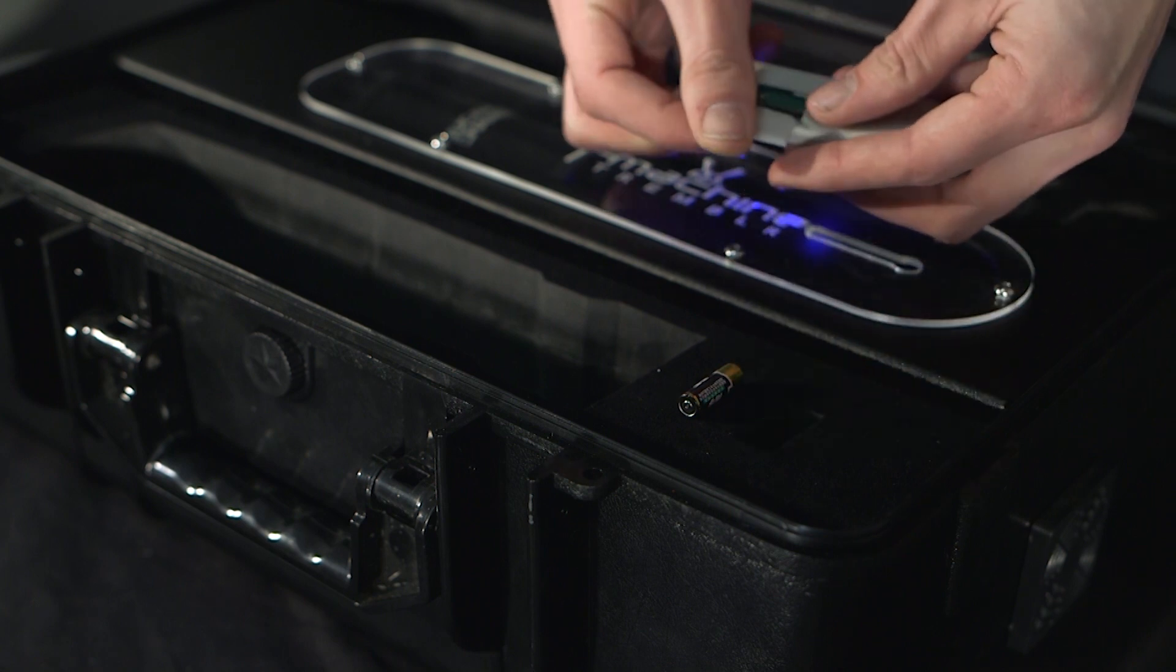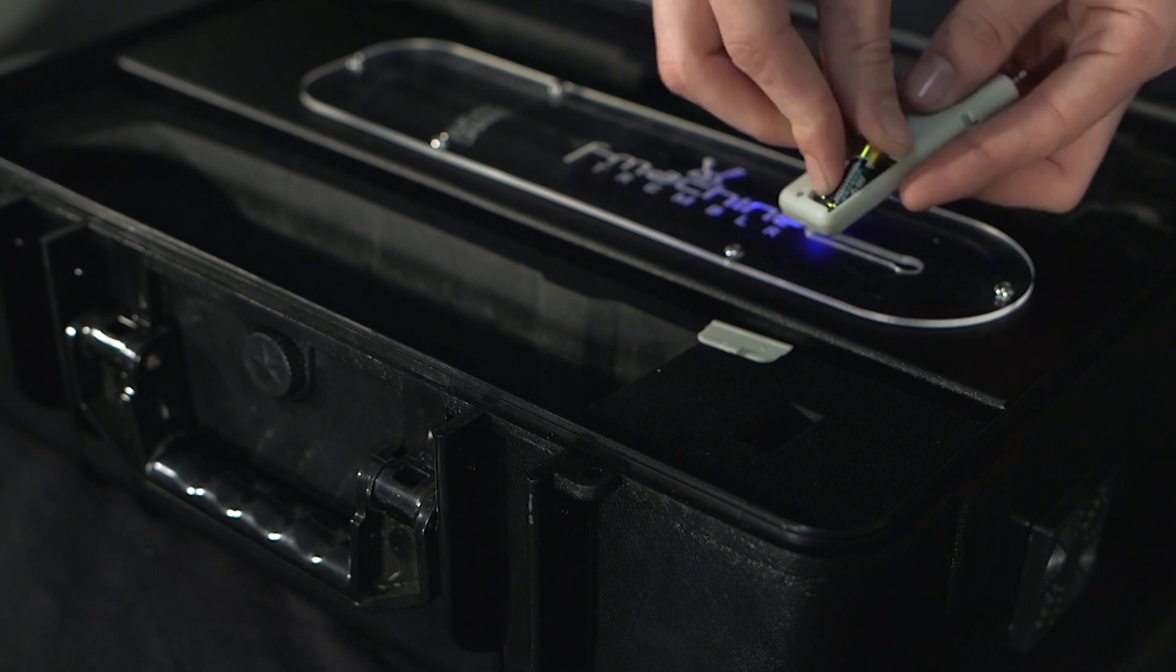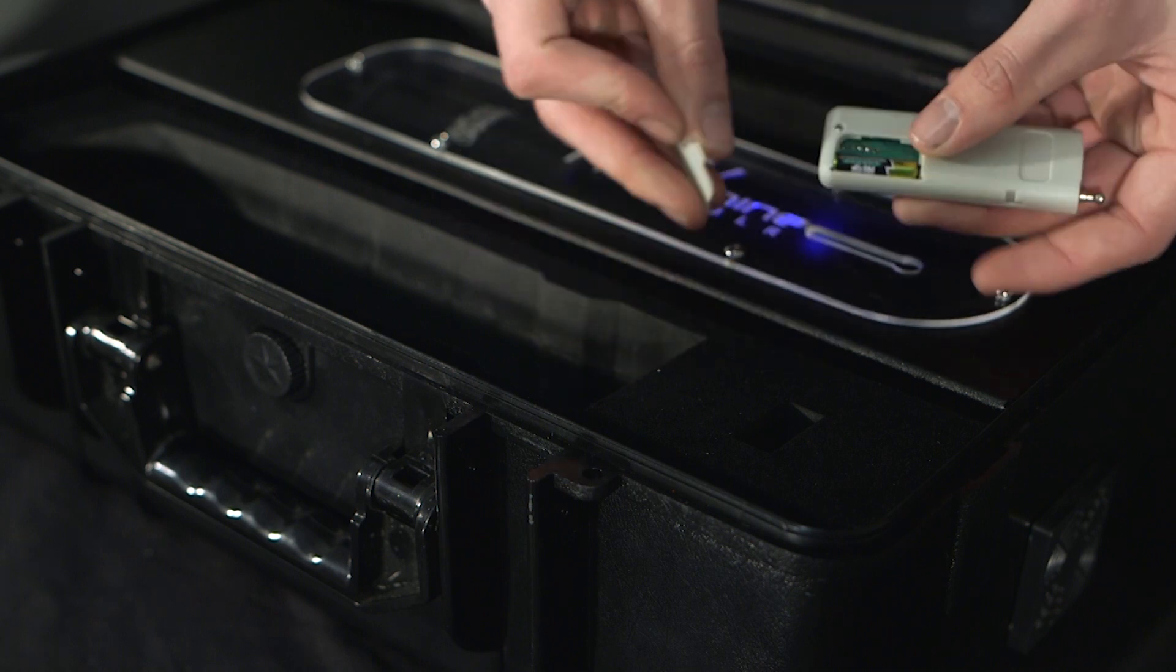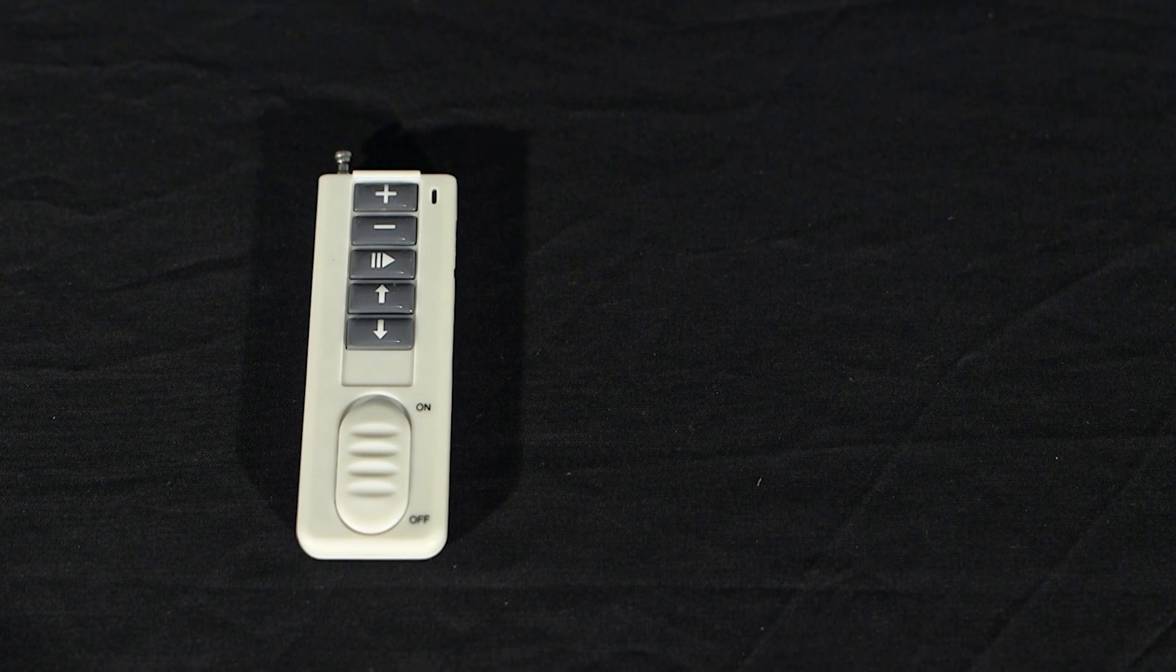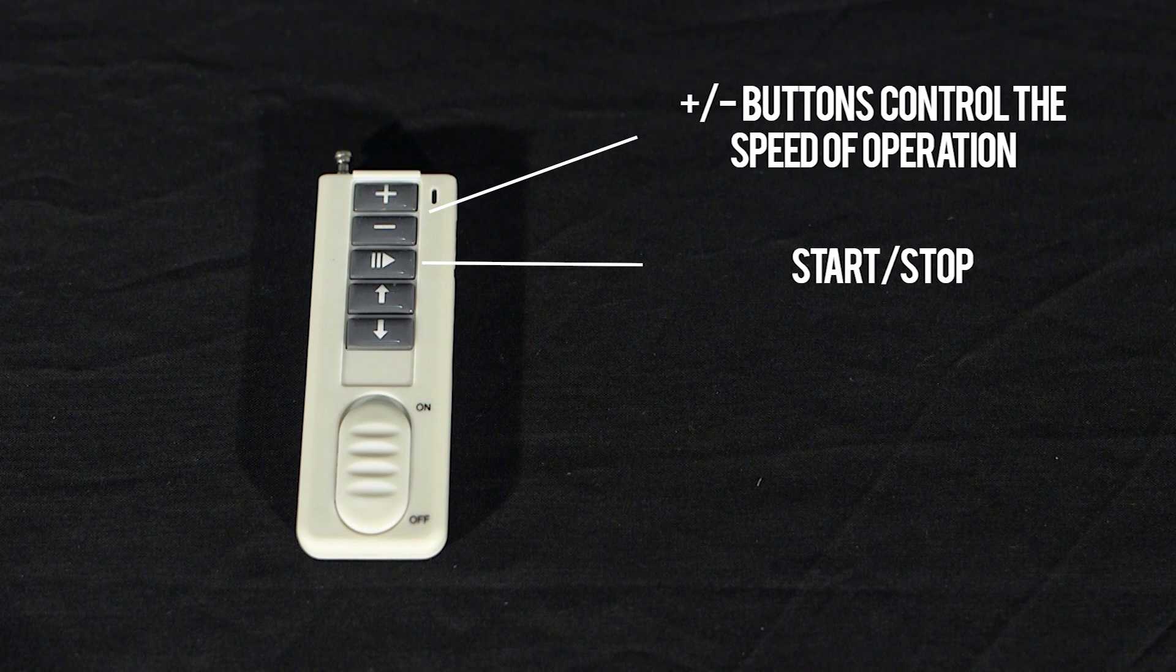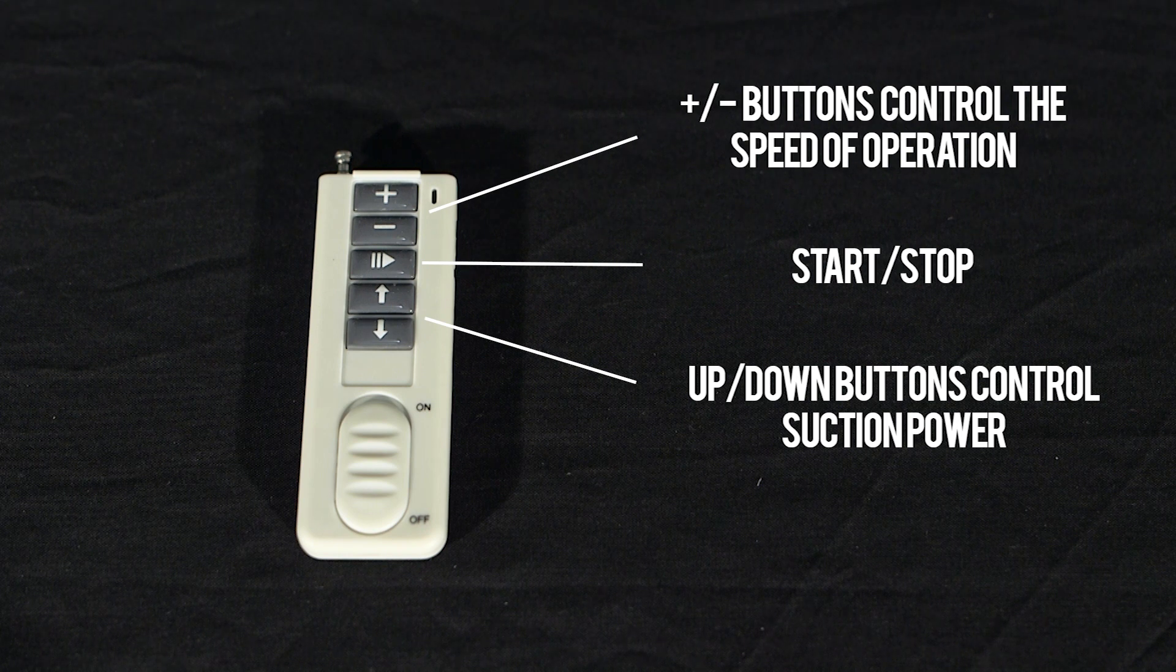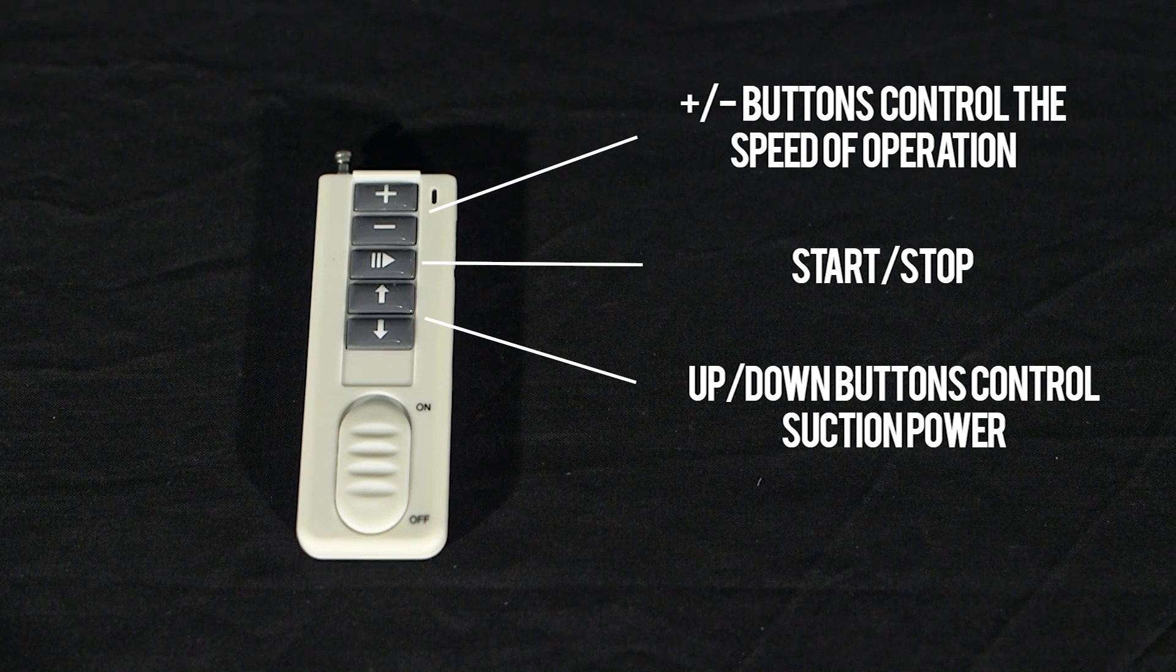Remove the remote and insert the supplied battery. The controls for your remote are as follows: plus and minus buttons control the speed of operation. There is a start and stop button. The arrow buttons control the suction power of the receiver. Arrow down for more suction. Arrow up for less suction and more receiver travel.